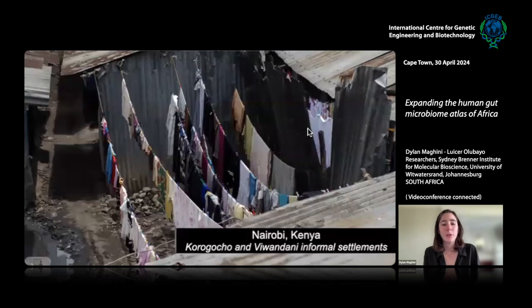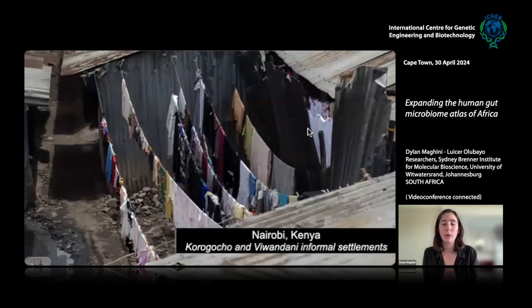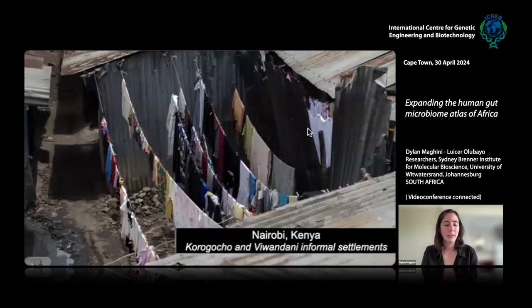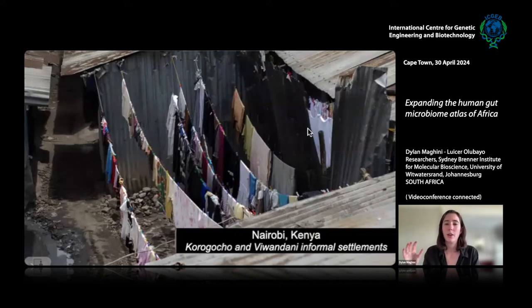We also sample from very urban environments. One study site is in Soweto, just outside of Johannesburg. We also sample from two informal settlements in Nairobi, Kenya — Korogocho and Viwandani — where population density is extremely high, access to clean water is extremely low, and employment is much more gig work and circular migration. This range of environments is one of the things that is very strong about AWI-Gen — we're sampling from three or four very different kinds of environments spanning a huge range of lifestyle, income, and nutrition.